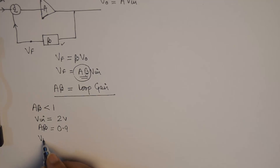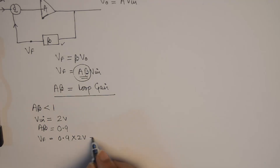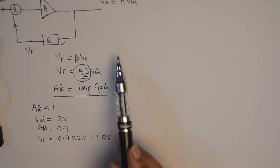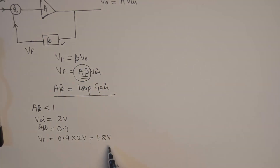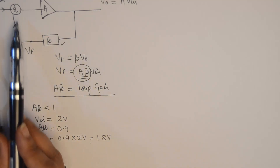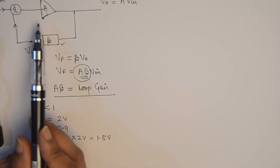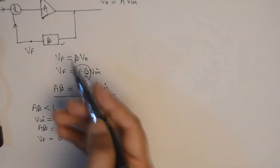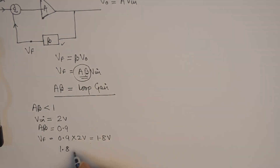The feedback voltage Vf, as per the formula, will be equal to 0.9 times 2 volts, which is equal to 1.8 volts. Every time the input passes through the loop, V0 is reduced — we started with 2 volts and now Vf is 1.8 volts. So the input voltage going to the amplifier has reduced and come down to 1.8 volts. This 1.8 volts will again get multiplied by the loop gain and it further reduces.